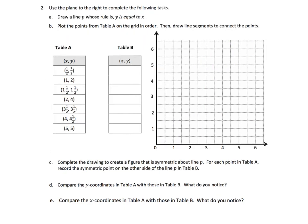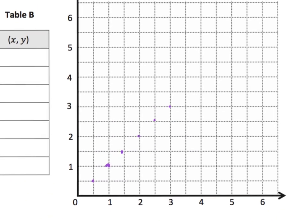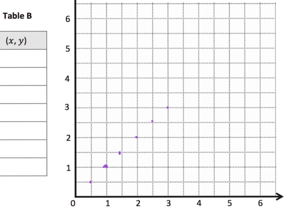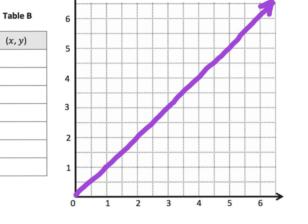This next one is exactly the same idea, except we have a different line of symmetry. Our line of symmetry is line P whose rule is y equals x. So that means our line of symmetry is going to go in this beautiful diagonal. There is our line of symmetry.